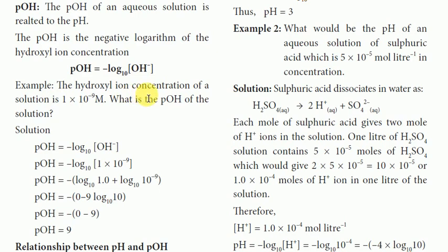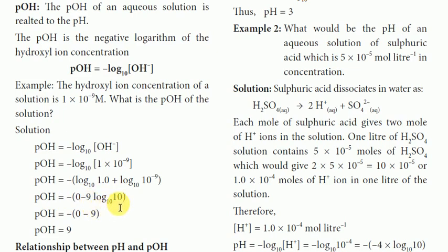The hydroxyl ion concentration of a solution is 1 × 10⁻⁹ molar. What is the pOH of the solution? So pOH equals minus log10 [OH⁻], which is minus log10 of 1 × 10⁻⁹. Expanding: pOH equals minus (log10 1.0 + log10 10⁻⁹) equals minus(0 − 9) equals 9.